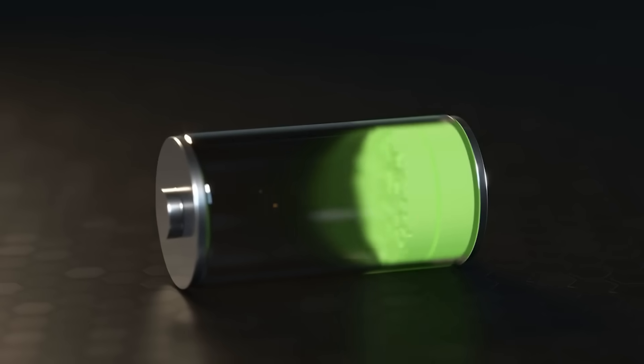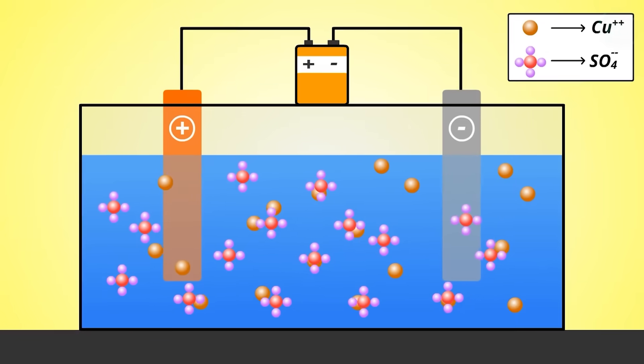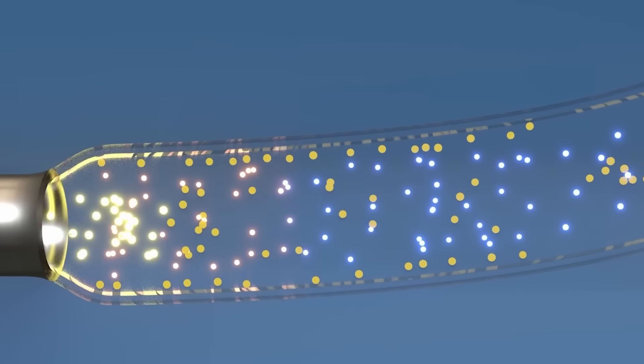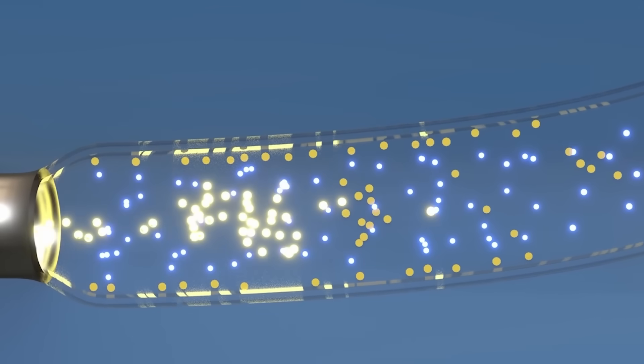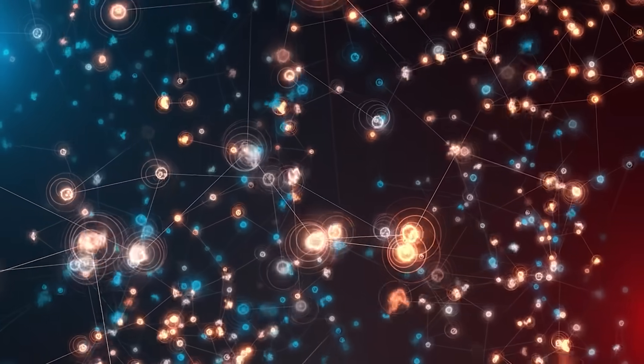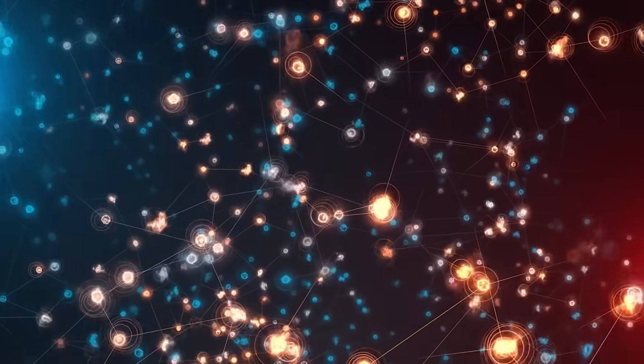During charging, the process reverses. Protons move back to the anode and electrons flow in the opposite direction. The flow of electrons and protons is controlled by differences in redox potential, a measure of how easily a material can gain or lose electrons.